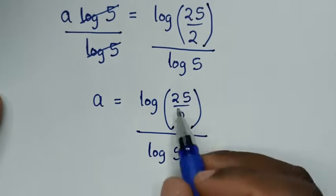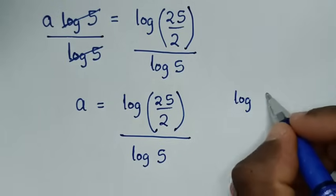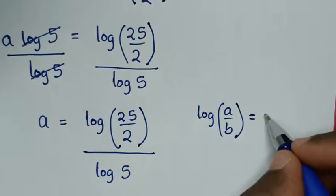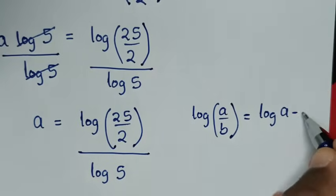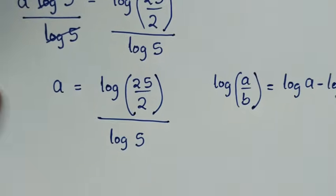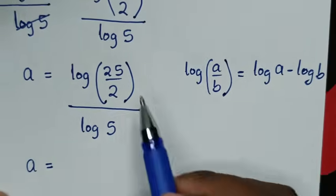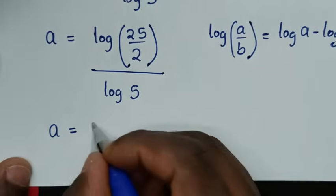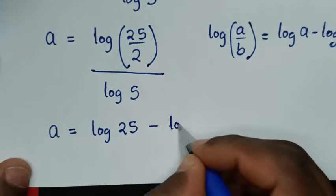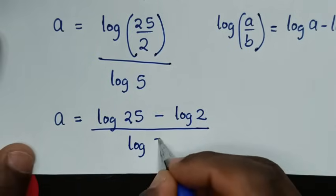In the next step, log of 25 over 2 is in the form of log of a over b, which equals log of a minus log of b. So we apply this form: a is equal to log of 25 minus log of 2, over log of 5.